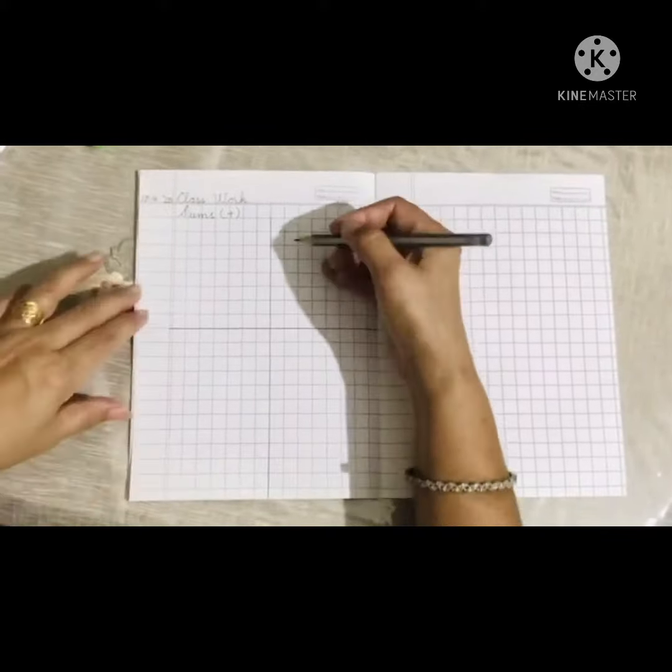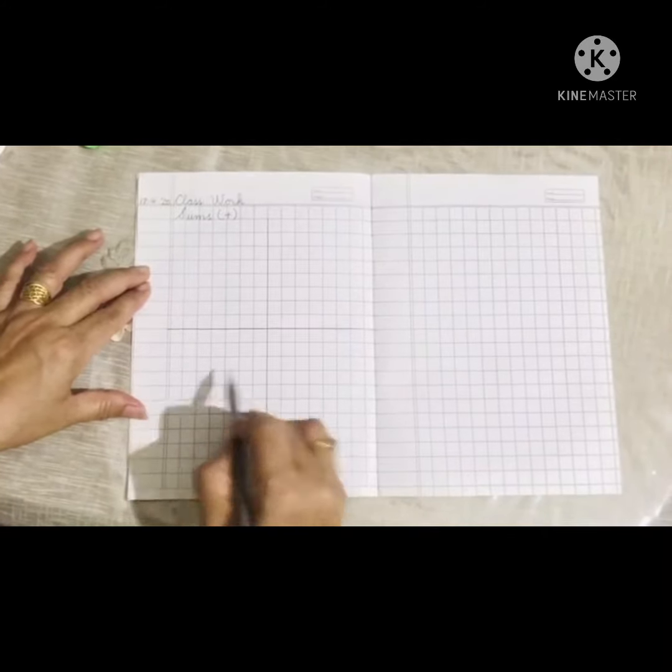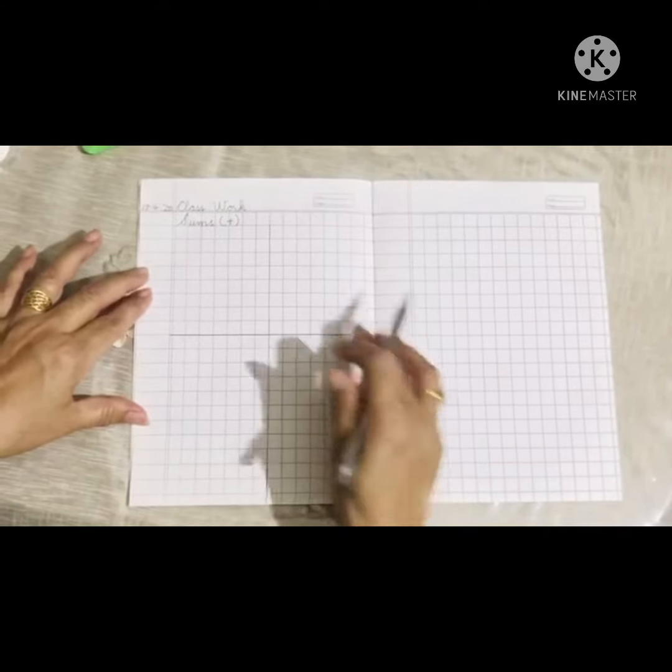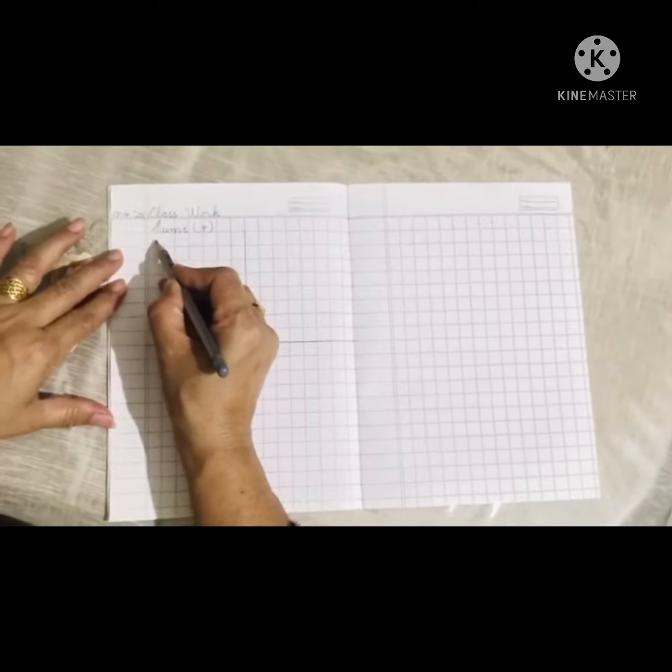Before starting, we are to divide the page into four equal parts to write the sums in a symmetrical order. For that we'll be putting four dots over here to write the sums in symmetrical order.